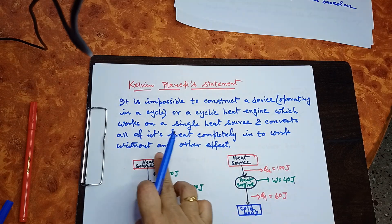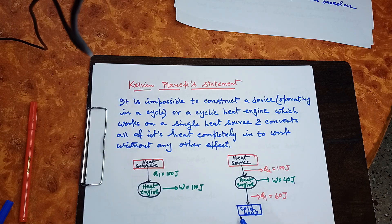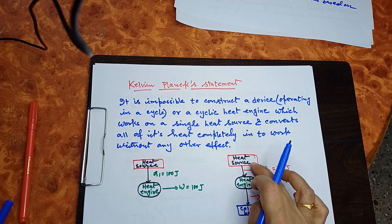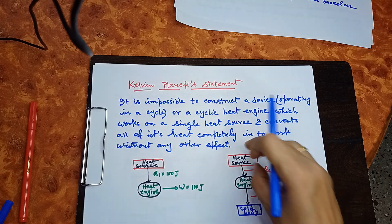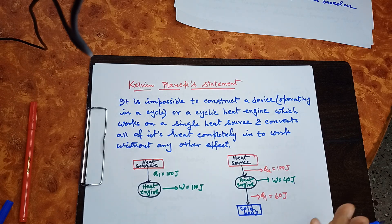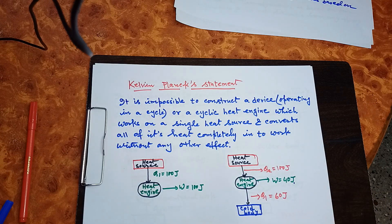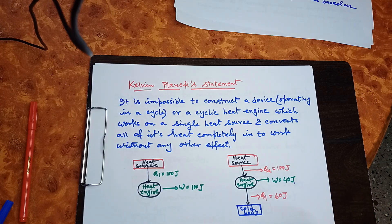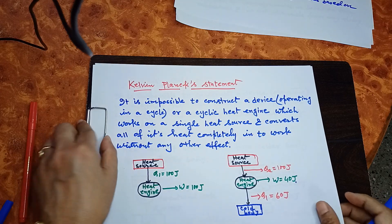If there is only one heat source, part of the heat absorbed by the heat engine will be converted to mechanical work and another part will bring changes elsewhere, as per the Kelvin-Planck statement. To avoid other changes, you must have two heat reservoirs — one at high temperature and one at low temperature. No machine is 100% efficient; higher efficiency means more heat converted to work and less released to the cold body.